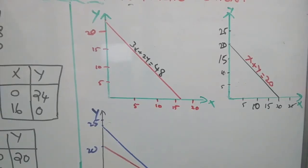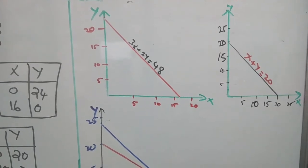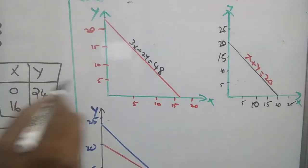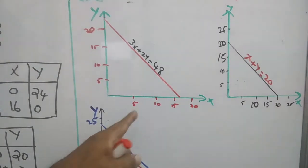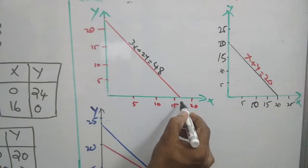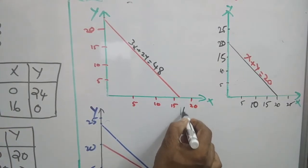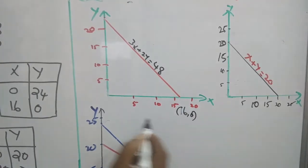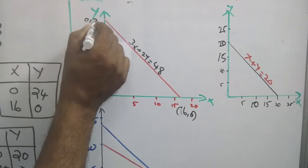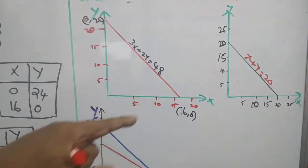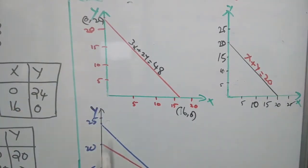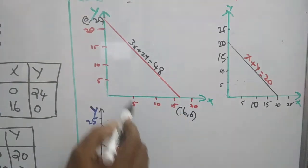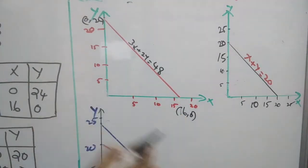The straight line 3x plus 2y equals 48 is plotted on the graph. The x-axis point is at x equals 16, giving the coordinate (16, 0), and the y-axis point is at y equals 24, giving the coordinate (0, 24). By joining these two points we get the line 3x plus 2y equals 48. Any point on this line satisfies the equation, and there are infinite combinations on this line.